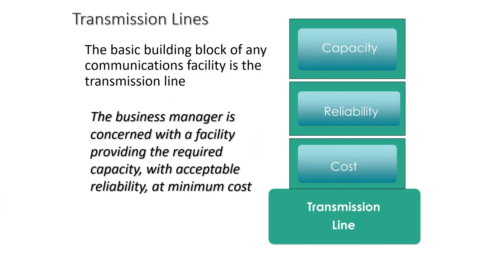The basic building block of any enterprise network infrastructure is the transmission line. Much of the technical detail of how information is encoded and transmitted across a line is of no real interest to the business manager. The manager is concerned with whether the particular facility provides the required capacity with acceptable reliability at a minimum cost. However, there are certain aspects of transmission technology that a manager must understand to ask the right questions and make informed decisions.